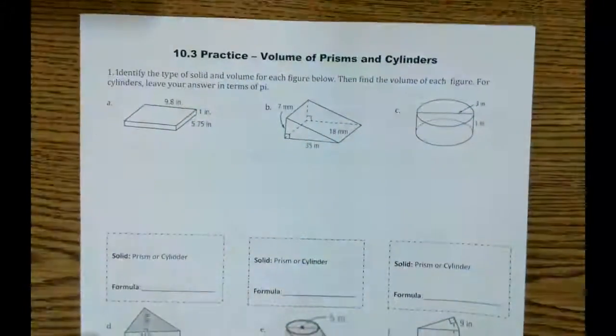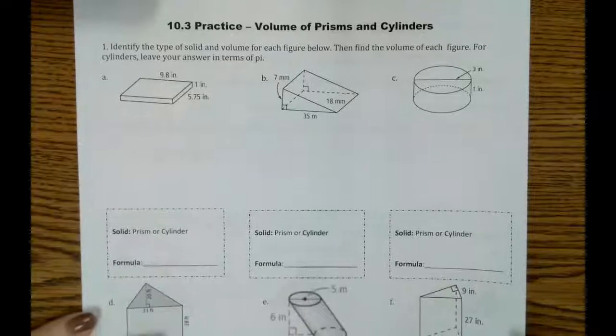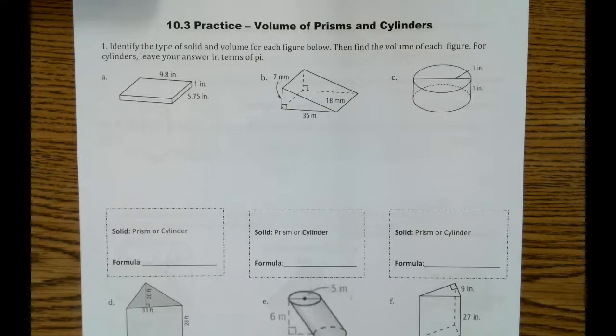Okay, great, we're on 10.3 practice. We're going to do all of number 1 here, so letters A through F. Here we're trying to identify the volume and decide if it's a prism or a cylinder.